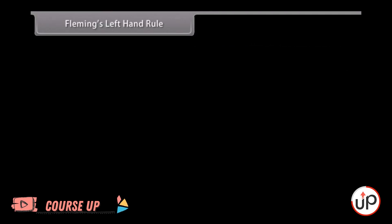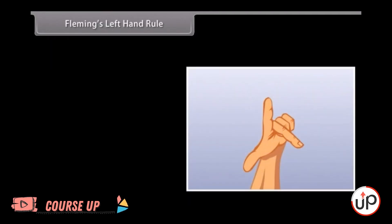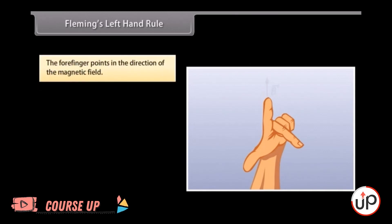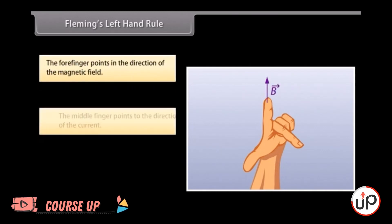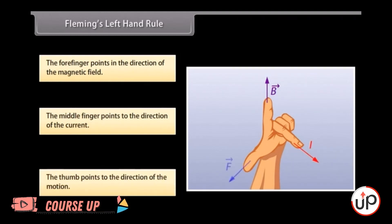Fleming's Left Hand Rule is a mnemonic to represent three directions. You need to stretch your thumb, forefinger, and middle finger of your left hand. Each finger points to a specific direction. The forefinger points in the direction of the magnetic field. The middle finger points to the direction of the current. The thumb points to the direction of the motion. This is Fleming's Left Hand Rule. Examples include woofers, subwoofers, electrical actuators, etc.